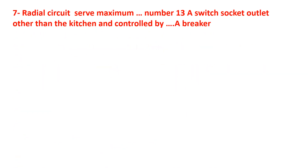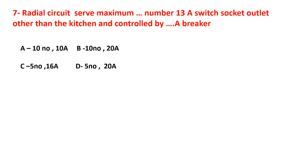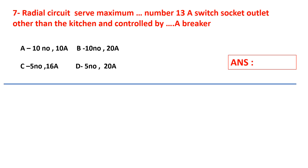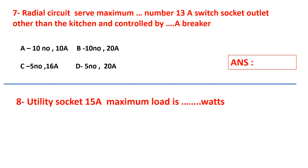Question number seven: radial circuits serve a maximum dash number of 13-ampere switch socket outlets, other than the kitchen, and are controlled by dash ampere breaker. Options: A) 10 number, 10 ampere; B) 10 number, 20 ampere; C) 5 number, 16 ampere; D) 5 number, 20 ampere. Select your answer.